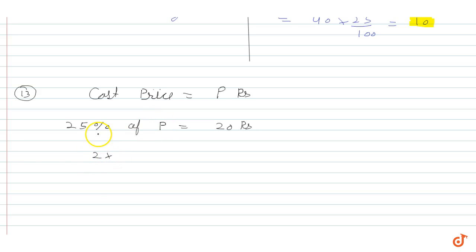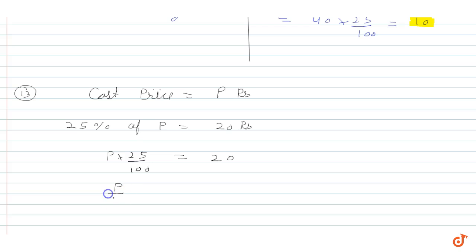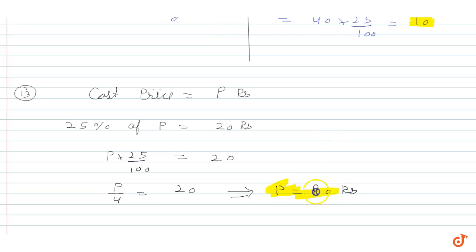So P into 25 by 100 is equal to 20. From here, P by 4 is equal to 20. Therefore, P is equal to Rs.80. So the actual price of the sweater was Rs.80. That is the answer for question number 13.